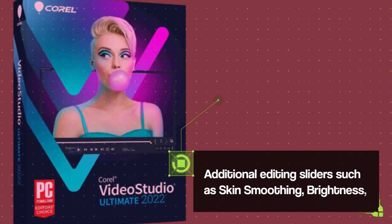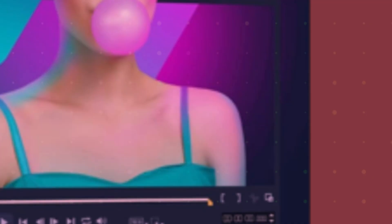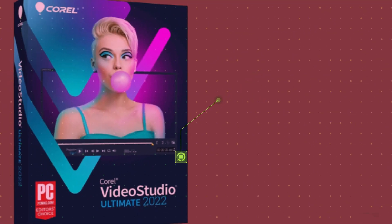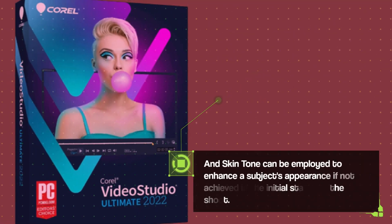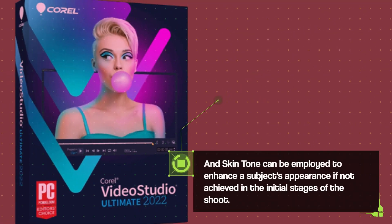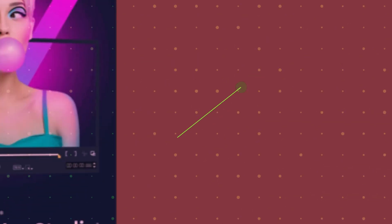Additional editing sliders such as skin smoothing, brightness, and skin tone can be employed to enhance a subject's appearance if not achieved in the initial stages of the shoot.